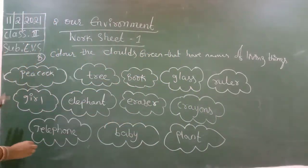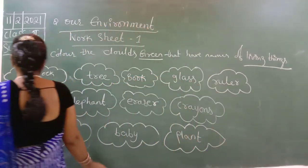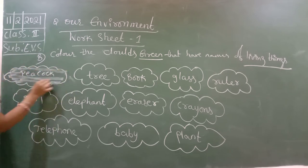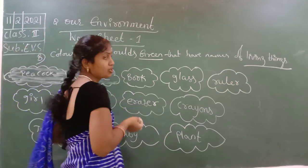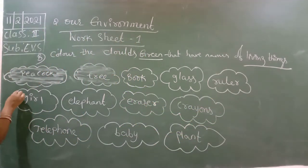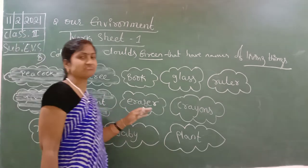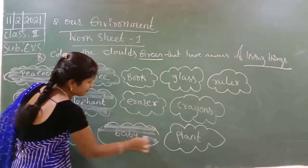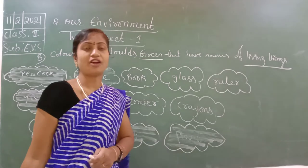So just apply the green colour to living things only. Peacock is an animal, living thing — apply green. Tree — living thing — apply green colour. Book — non-living thing. Glass — non-living thing. Ruler — non-living thing. Girl — living thing. Elephant — living thing. Eraser — non-living thing. Crayons — not a living thing. Telephone — not. Baby — living thing. Plant — living thing. Like that you have to apply the green colour.